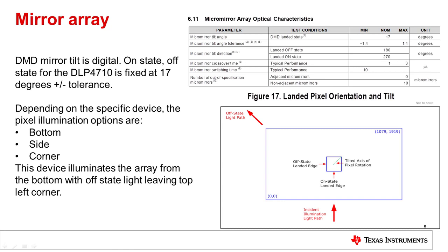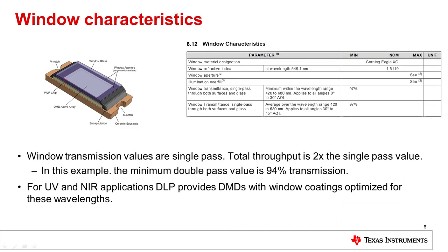DMD pixel designs offer three different illumination directions depending on the device: bottom, side, and corner. The 5.4 micron pitch devices have a 17 degree tilt angle. The illumination options are designed for optimum efficiency while providing the smallest optical volume possible. Total transmission through the windows is calculated by the square of 97% transmittance, or 94% transmission.